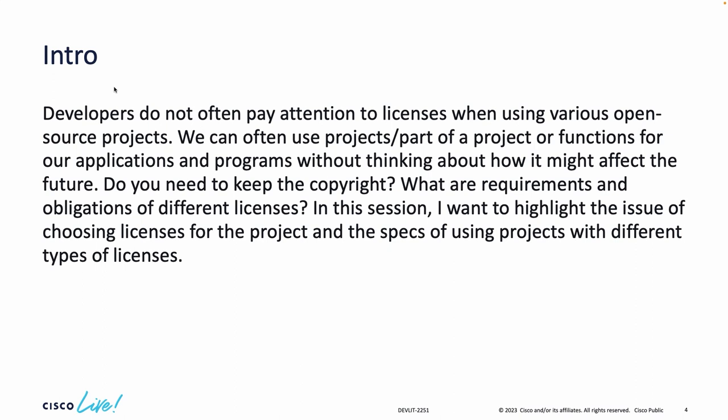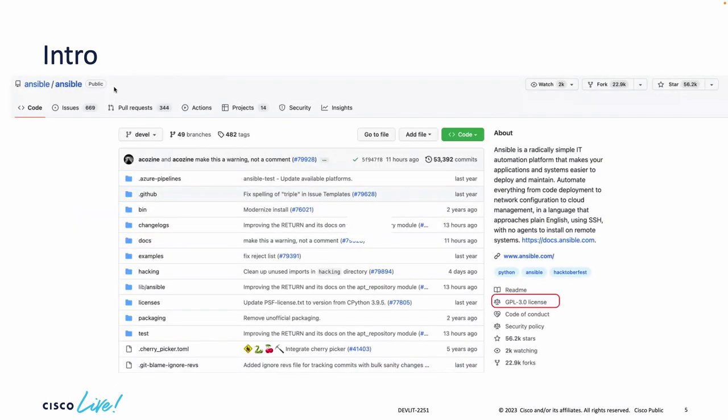Usually developers do not pay much attention to licensing. We typically fork or download scripts from GitHub or GitLab, reuse them, put them in our workflow or new application without paying attention. But how many of you keep the copyrights of projects you clone? What are the requirements and obligations of different licenses? How can different licensing affect our derived work? We'll talk about that now.